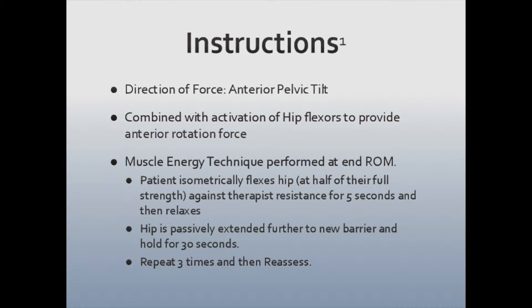To help provide an anterior rotation force, a muscle energy technique will be performed at end range of motion. The patient will isometrically activate their hip flexors at half of their available strength against therapist resistance for 5 seconds and will then relax. The therapist will passively extend the patient's hip further into the new barrier and repeat this procedure 3 times. The therapist will then reassess the patient and, if the inominate is not aligned, repeat until alignment has been achieved.